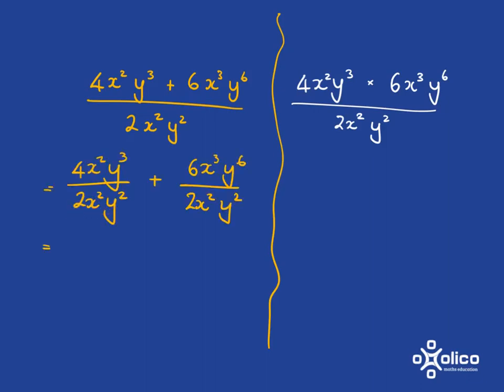So we distribute this to each of the terms from the top and then we do our division. 4 over 2 is 2, x squared over x squared is 1, y cubed over y squared is y, 6 over 2 is 3, x cubed over x squared is x, and y to the 6 over y squared is y to the 4.